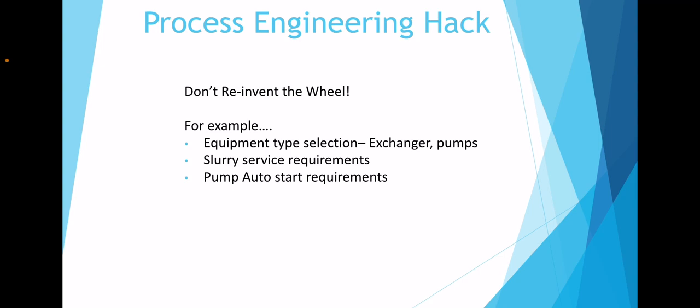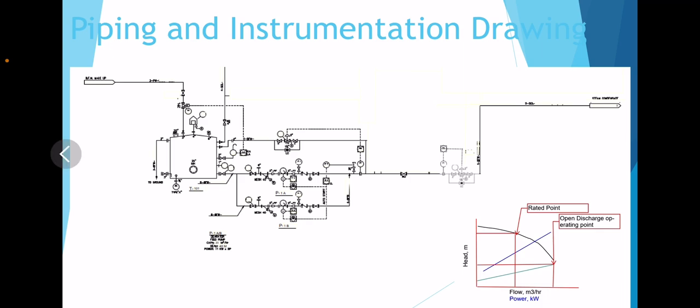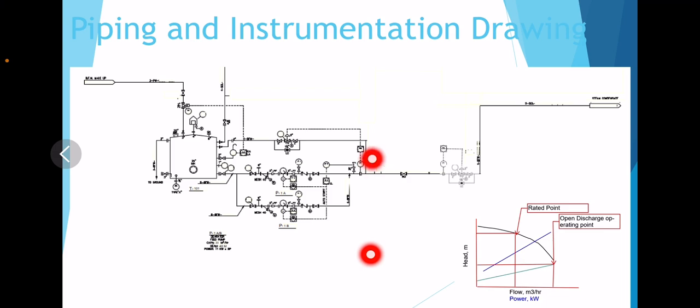Number 2 is slurry service requirements. In slurry services, it is important — particularly on pump discharges — to not place check valves, because check valves could choke up under the presence of slurry. Thirdly, let's look at pump auto-start requirements. In the previous sample P&ID, there is a pressure transmitter located on the pump discharge which senses the pressure. When it drops due to any problem, it activates the spare pump motor. So whenever one pump fails, the other pump would start automatically to maintain the flow.